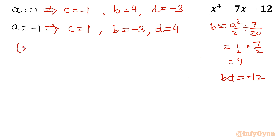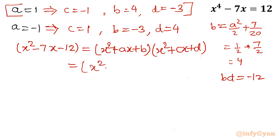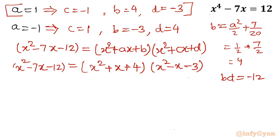So our equation x⁴ - 7x - 12 factors as (x² + ax + b)(x² + cx + d). Using the first set, the factorization becomes (x² + x + 4)(x² - x - 3) = 0. This quartic gives 4 roots — 2 from the first factor and 2 from the second.